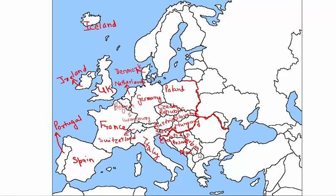Right next to Montenegro is another small country below Serbia — that is Kosovo. Below Montenegro and Kosovo is Albania. Next to Albania you have Macedonia — the country from which Alexander the Great ruled. Then below Albania and Macedonia we have this famous country with a lot of ancient culture — Greece, the legendary Greece.